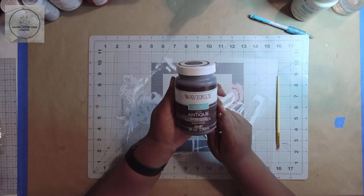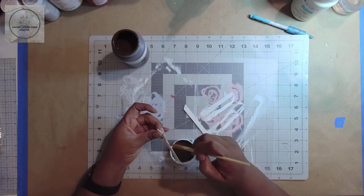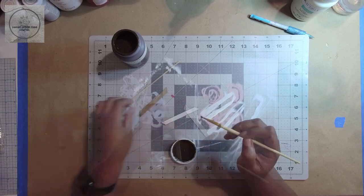Once the paint was dry, I came in with Waverly wax in antique and painted the roof pieces, then set them aside to dry.